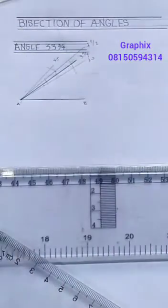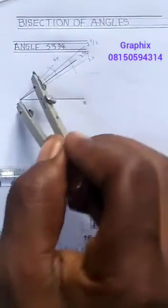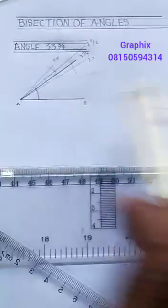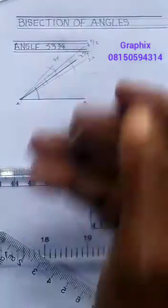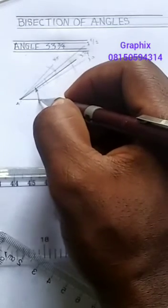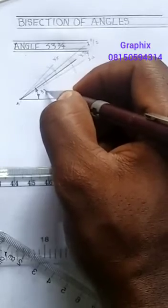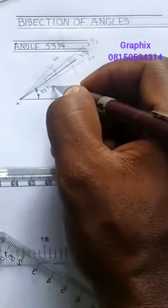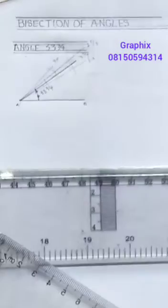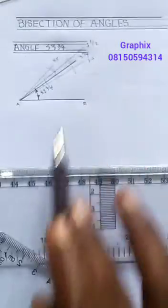So the angle in between here and here is 33 and 3 quarter. This is how to construct my 33 and 3 quarter here.